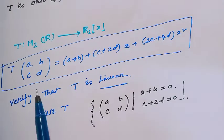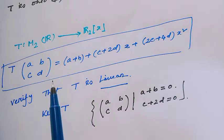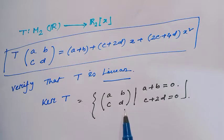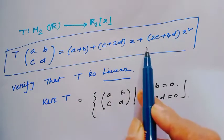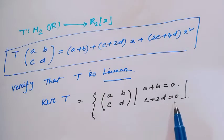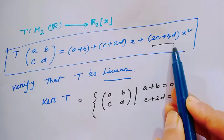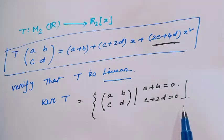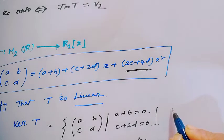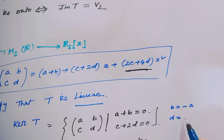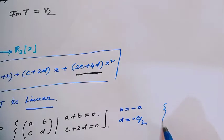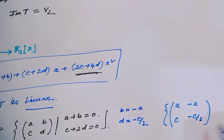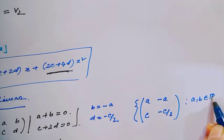Now verify what is kernel T. Kernel T is the set of all 2×2 matrices that map to the zero polynomial. That means the set of matrices (a, b, c, d) such that a + b = 0, c + 2d = 0, and 2c + 4d = 0. Notice 2c + 4d is just 2 times (c + 2d), so only two conditions remain: a + b = 0 and c + 2d = 0. From these, b = −a and d = −c/2.